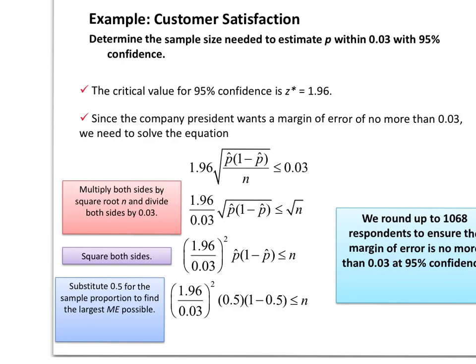We would then solve for n, keeping in mind that p hat, if we don't know what it is, we would use the replacement of 0.5 wherever we had p hat, knowing that that wouldn't make it any bigger. That would be the biggest possible margin of error.